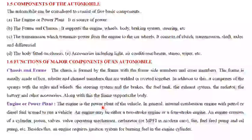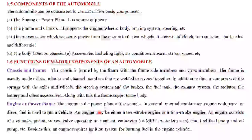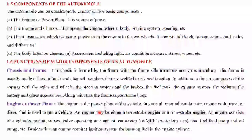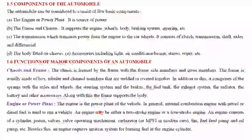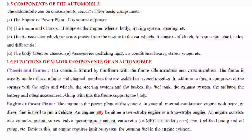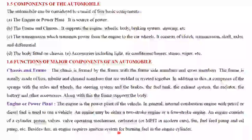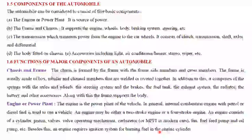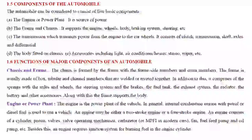Next is the power plant or engine. The power plant or engine provides the motive power for all the various functions the vehicle may be called upon to perform. The power plant consists of an internal combustion engine, which may be either an SI engine — spark ignition engine — or a CI engine — compression ignition type engine. The engine consists of a cylinder, piston, valves, valve operating mechanism, carburetor or multi-point fuel injection in modern cars, fan, fuel feed pump, and oil pump. Besides this, an engine requires an ignition system or injection system for burning of fuel in the engine cylinder.